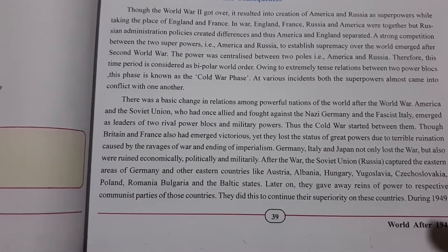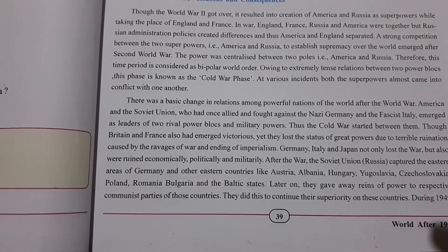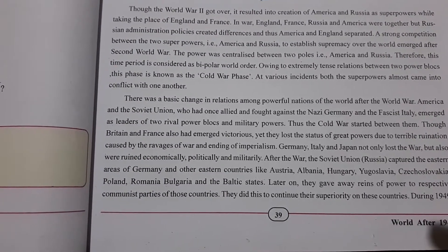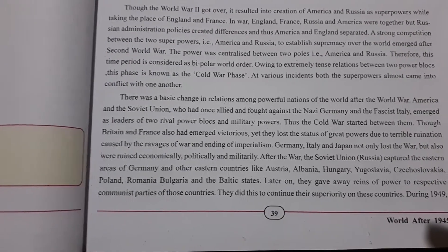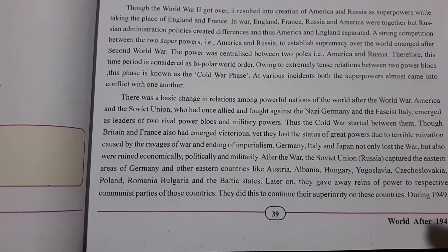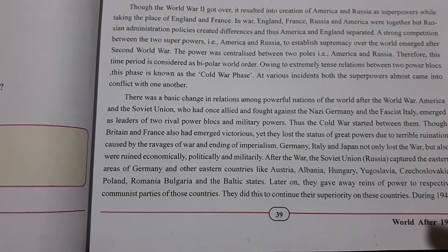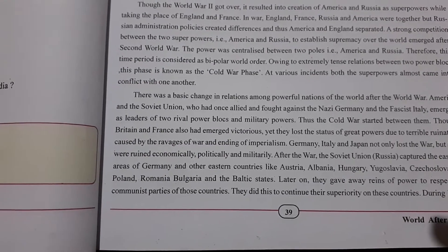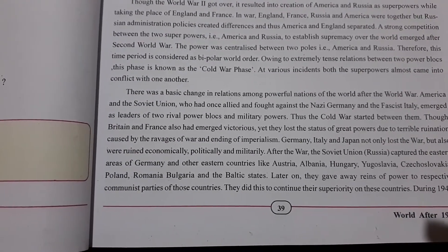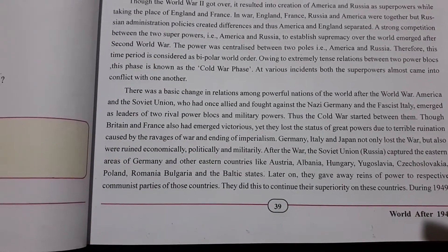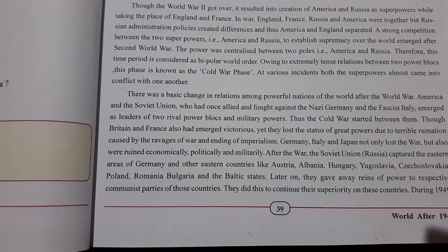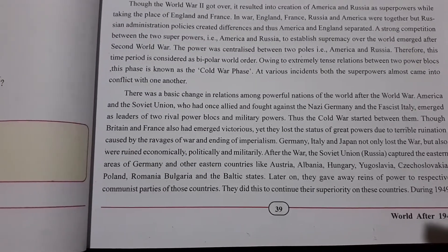After the war, the Soviet Union captured the eastern areas of Germany and other eastern countries like Austria, Albania, Hungary, Yugoslavia, Czechoslovakia, Poland, Romania, Bulgaria, and the Baltic states. Later on, they handed over the reins of power to the respective communist parties of those countries. They did this to continue their superiority over these countries.